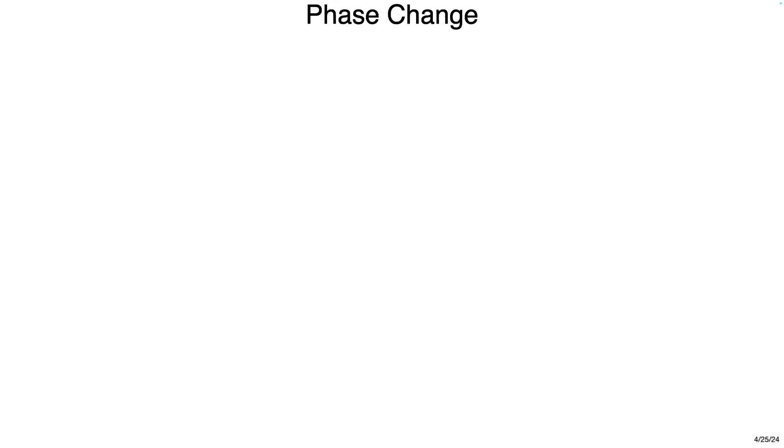Phase change. Name a phase of matter. Solid, liquid, gas - right. There are more than those three. There's a fourth state of matter, otherwise known as plasma. A plasma is a gas that consists of only charged particles.